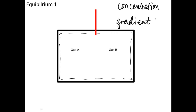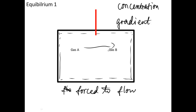Because of this concentration gradient, gas A is forced to flow into the right container, and similarly gas B is forced to flow into the left container. We call this phenomenon diffusion.